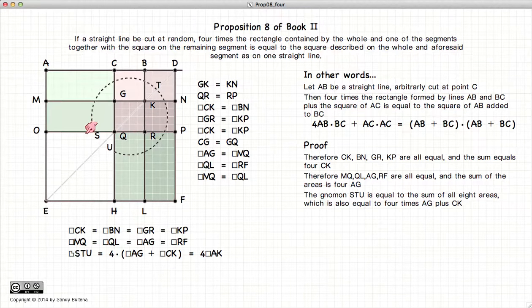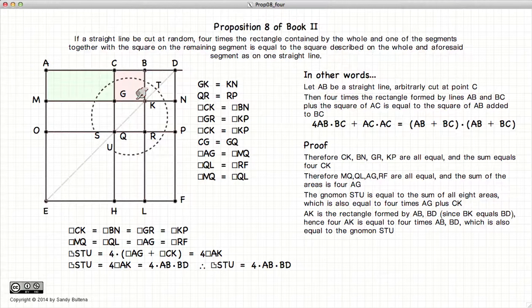So now if we look at the gnomon STU, it is equal to AG times four, since they're all equal, so each one of these is equal to AG, so AG times four, plus CK times four, since CK is also equal to these squares. So again, STU is equal to AG plus CK. But what is AG plus CK? That would give us AK.